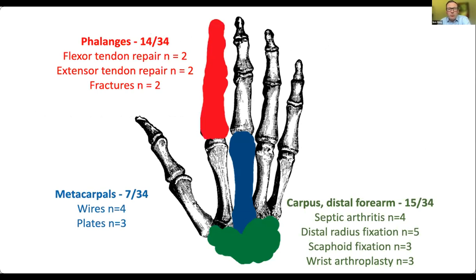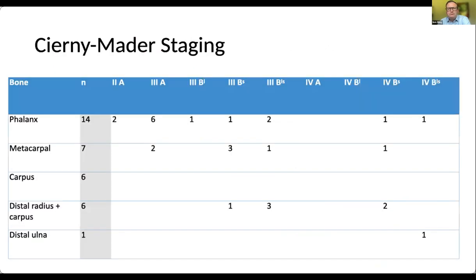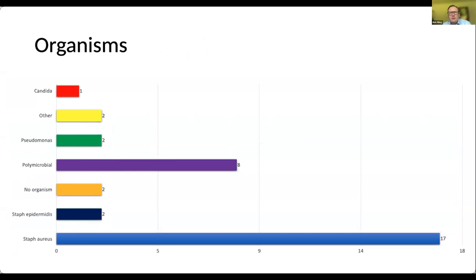We had a wide heterogeneous group of patients. About half had phalangeal problems or carpal and distal radius problems, and about seven had issues with the metacarpals. Interestingly, all patients with metacarpal problems had previously had metalwork in situ. When we looked at Cernia-Mada staging, the majority were type B hosts, and the majority had a mix of cortical and medullary disease. As expected, the majority had Staphylococcus aureus, though we had some interesting organisms and a slightly higher rate of polymicrobial disease — likely because a reasonable number of patients had had metalwork in situ, which tends to produce a higher-than-average polymicrobial mix.